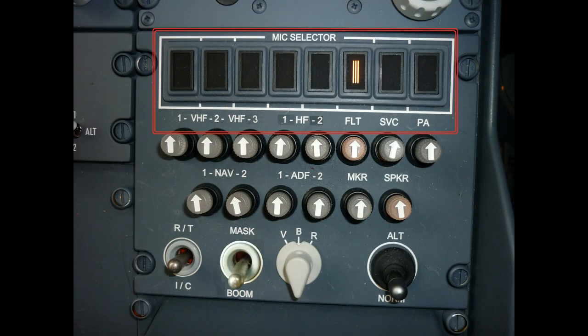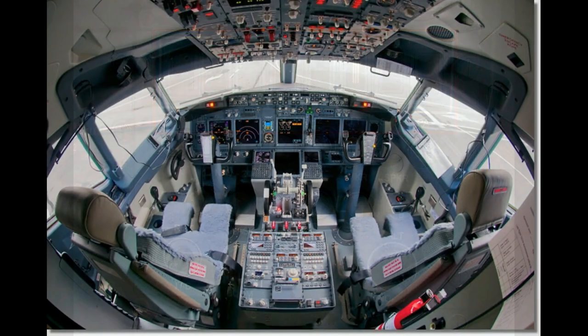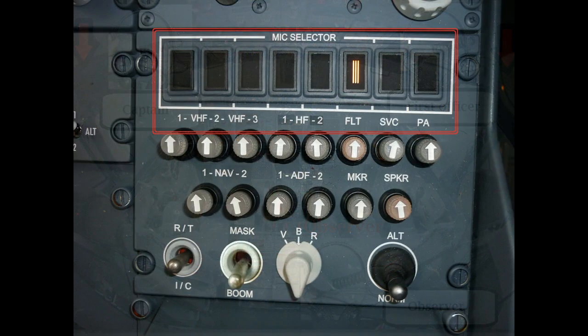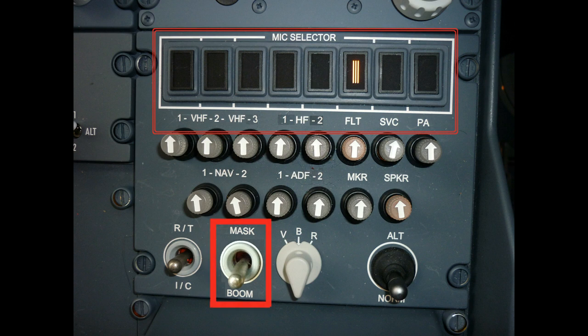Whichever mic selector button is lit — in this case flight interphone — is where you're going to be talking to. Or you could opt to use the boom microphone. Again, all three flight deck positions have one, but to use it you need to do a little more prep work. You'll notice this switch right here. What it does is determine where the key line is routed to — fancy mumbo jumbo that means when I press the button to talk, who will I be talking to? The boom mic or the mask mic?